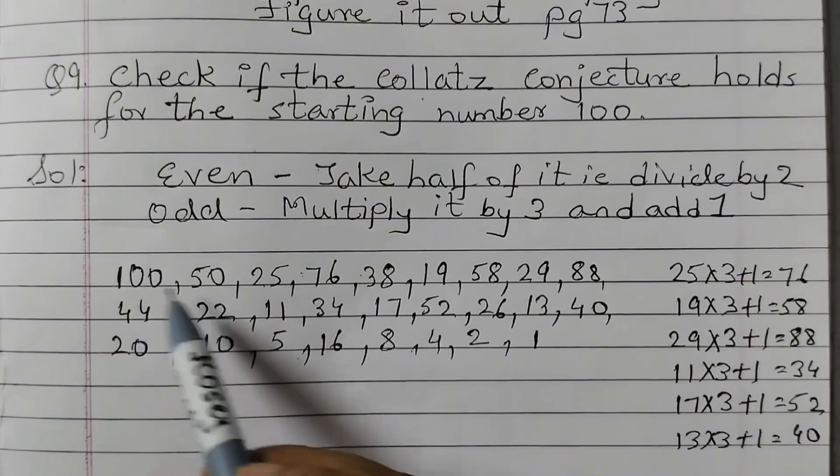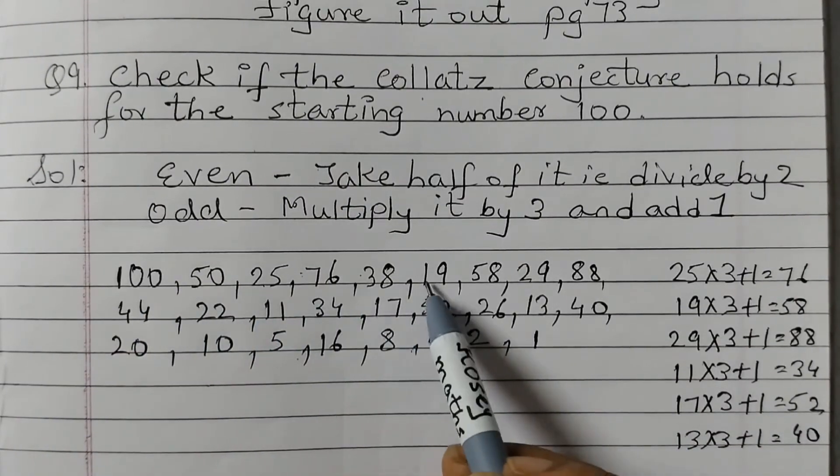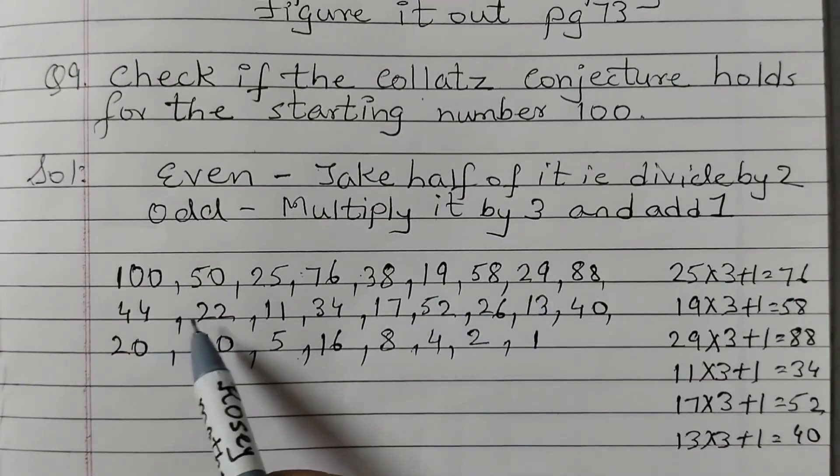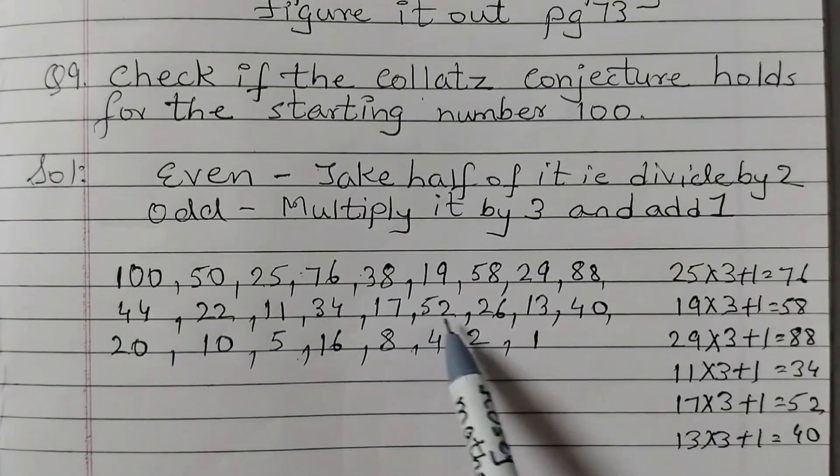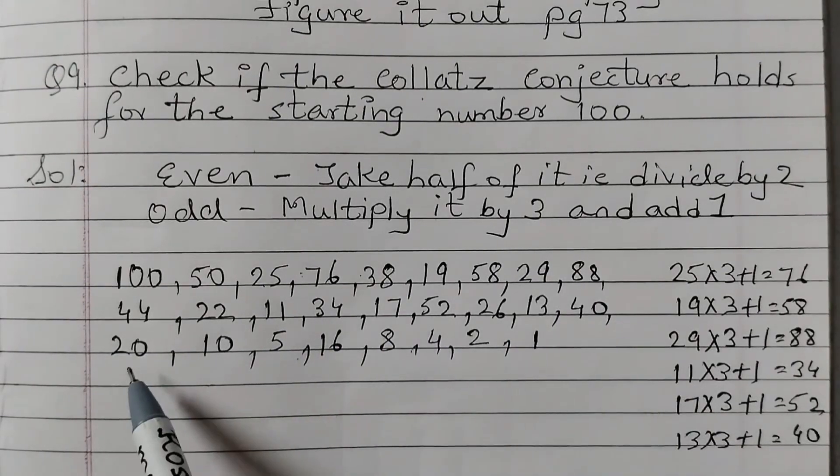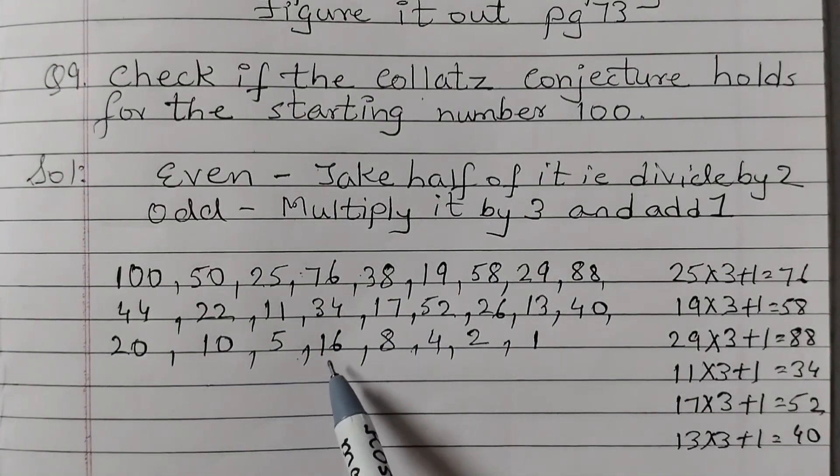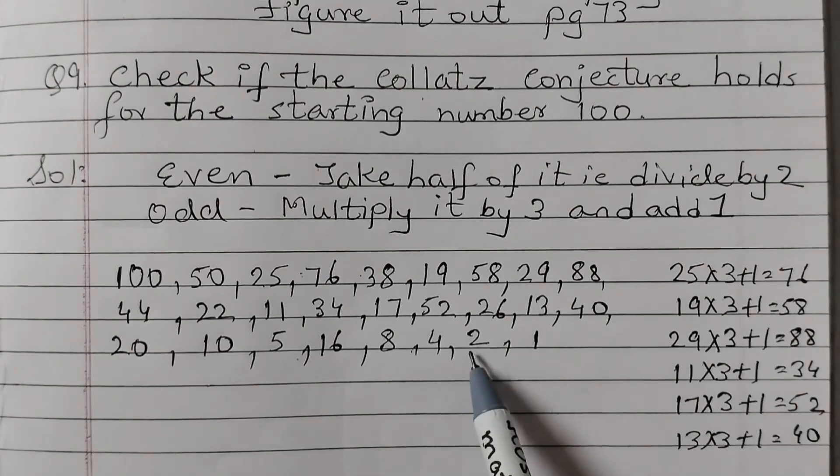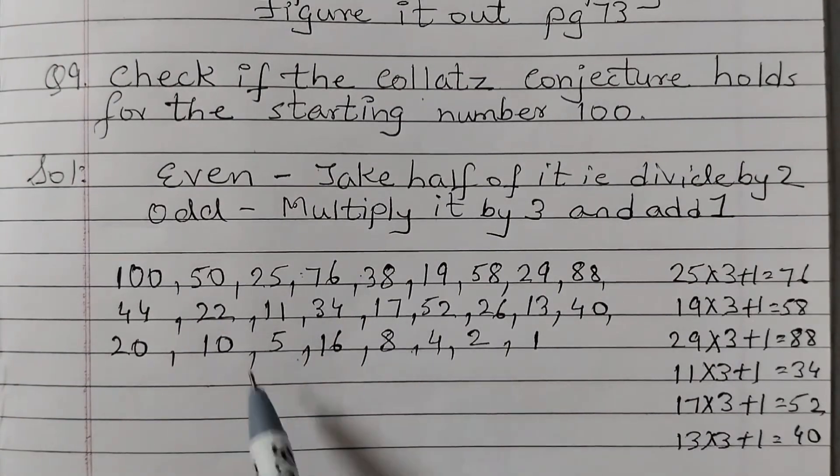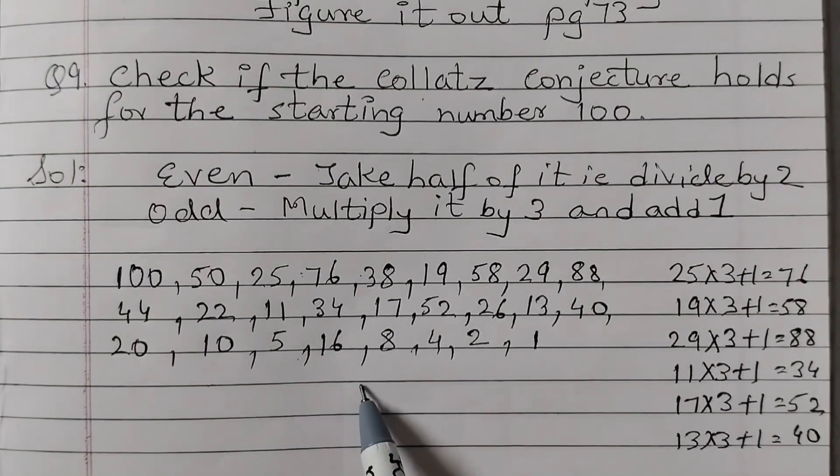And how many numbers are there? 1, 2, 3, 4, 5, 6, 7, 8, 9, 10, 11, 12, 13, 14, 15, 16, 17, 18, 19, 20, 21, 22, 23, 24, 25, 26. So here we have 26 numbers.